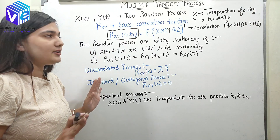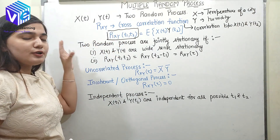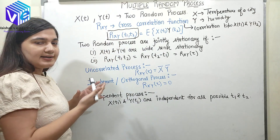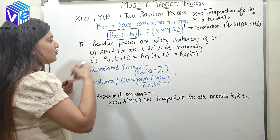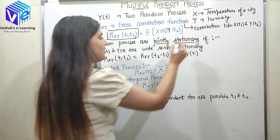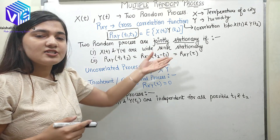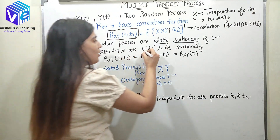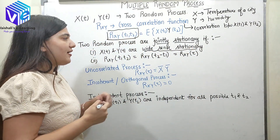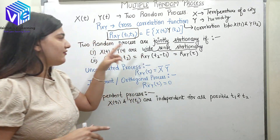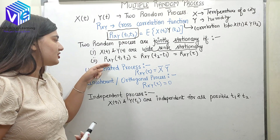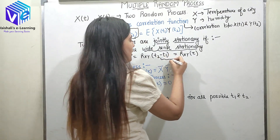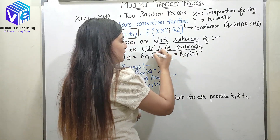Now coming to joint stationarity. If I have two random processes X(t) and Y(t), they are jointly stationary only if both of them are individually wide sense stationary. If X(t) alone and Y(t) alone are wide sense stationary, and then when I look at both combined and find the auto correlation function, if the auto correlation function does not depend upon time — meaning it comes out to be a function of (t2 - t1) — then it is always a constant.